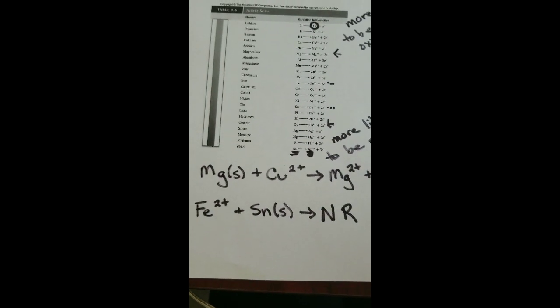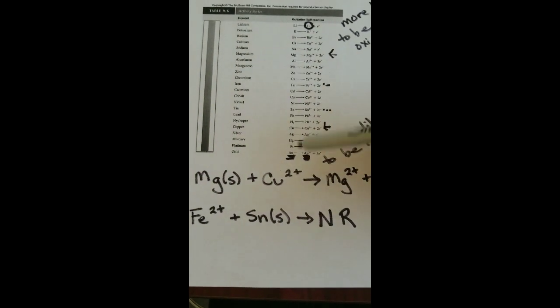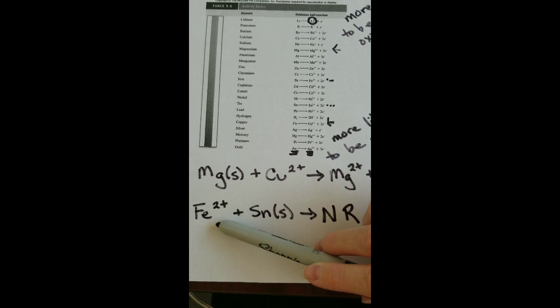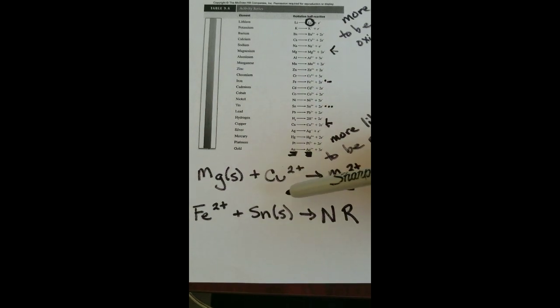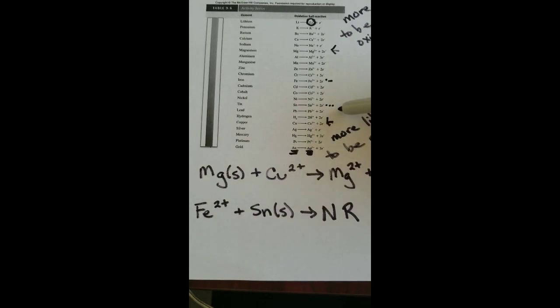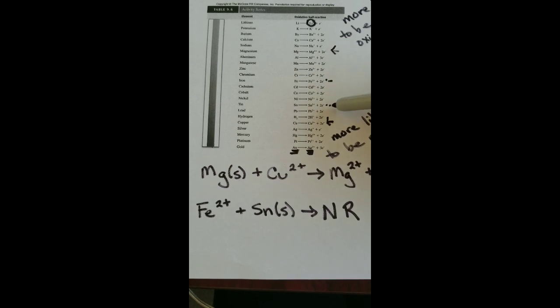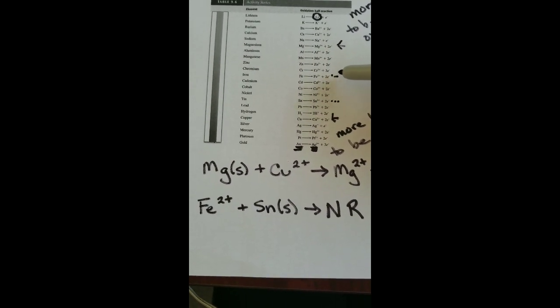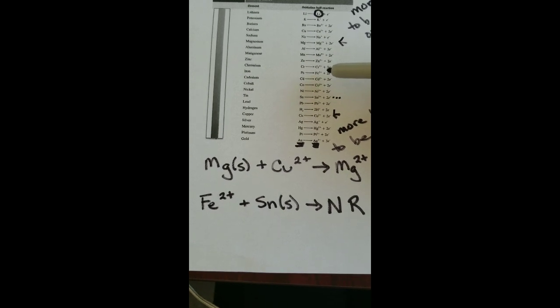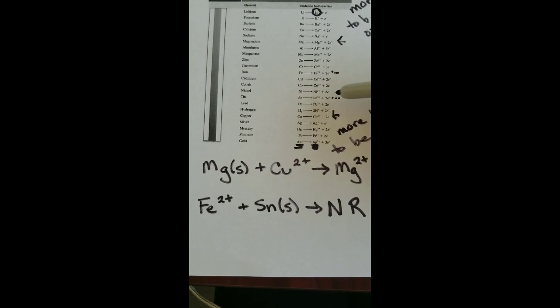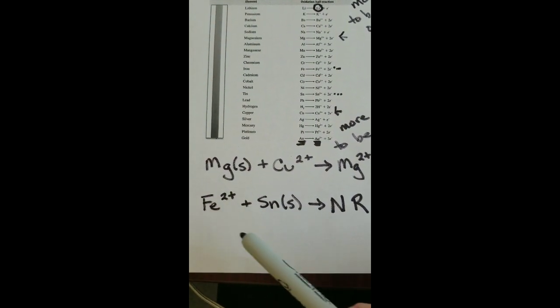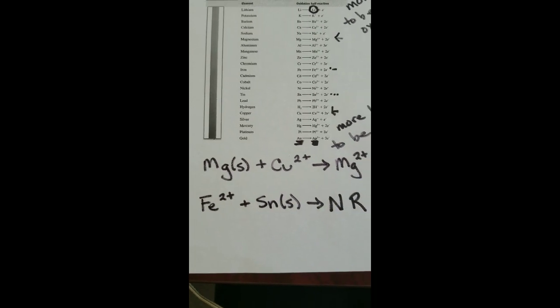We are going to get no reaction from this. Because the states that they're already in, iron is being oxidized and being positive, tin is being neutral, being reduced already, is already their most likely state from the chart. So since iron is higher, it should be oxidized in a positive state. Since tin is lower, it should be reduced in a neutral state. And that's what we already have. So no reaction is going to happen because these guys are already exactly where they want to be.